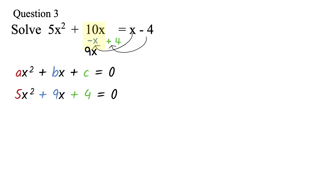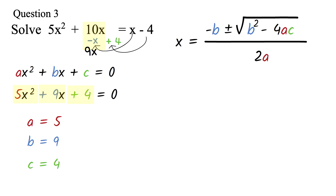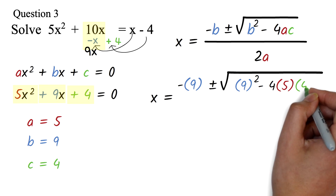In this form, the coefficient of x squared is your a value. Here, the a value is 5. The b is the coefficient of x. So here, the b is 9. Then c is the constant. Here, the c value is 4. Now we put these values in our formula. The quadratic formula is x equals minus b plus or minus square root of b squared minus 4ac, all over 2a. We'll just replace each of the letters by their values. Please take note of the color code so you know where everything is coming from. We have x equals minus 9 plus or minus square root of 9 squared minus 4 times 5 times 4, all over 2 times 5.